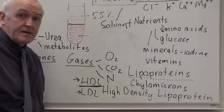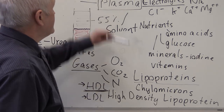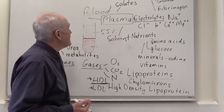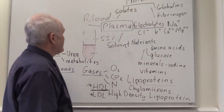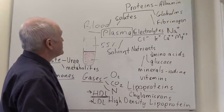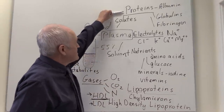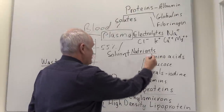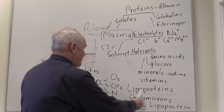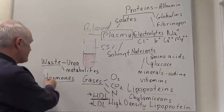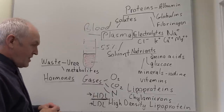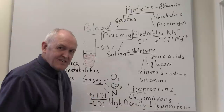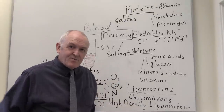So that's just a quick tour of the plasma. We've considered how blood is divided into plasma and cells, that the solvent in plasma is water, and that the solutes include proteins, electrolytes, nutrients, lipoproteins, waste products, hormones, and gases — all being carried around the body in this great circulatory system which is the blood.